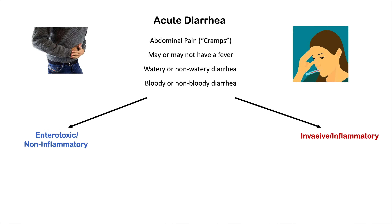In invasive or inflammatory acute diarrhea, an infectious agent — often a bacterium — penetrates and invades into the gastrointestinal lining. This leads to damage and destruction of GI cells, and can cause breakage of blood vessels leading to bloody diarrhea. Because the agent is invading the cells and underlying tissue, the body responds by recruiting white blood cells into the area, causing inflammation of the GI tract and usually leading to fever as well.